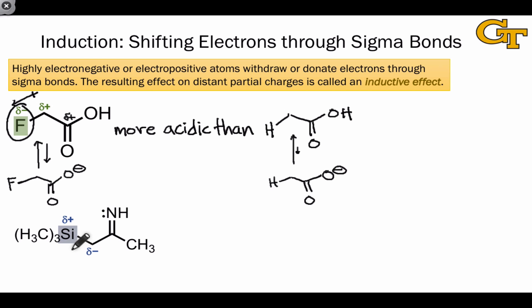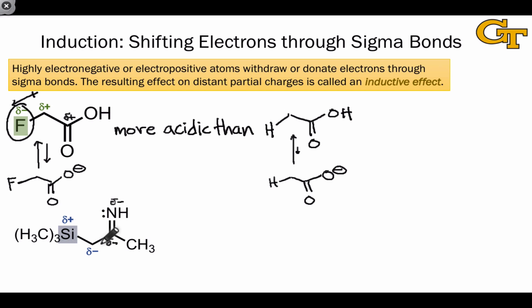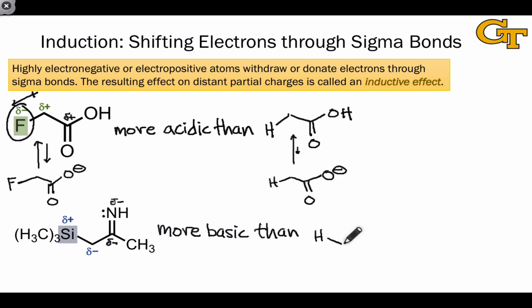Silicon is a famous example of an electropositive atom, and it donates electron density to nearby atoms — for example, the carbon shown with a delta negative, and even atoms beyond that, such as the carbon and nitrogen involved in a CN double bond. This carbon and nitrogen are more negative than they would have been in the absence of the silicon group, making the nitrogen's lone pair more basic than a comparable structure that lacks the silicon group. This effect is due entirely to the electron-donating nature of the silicon atom.